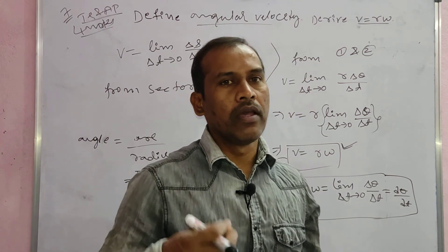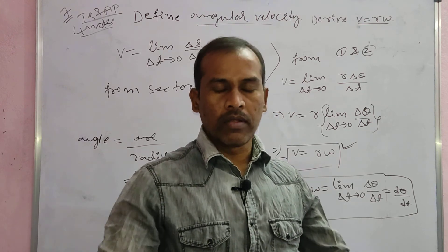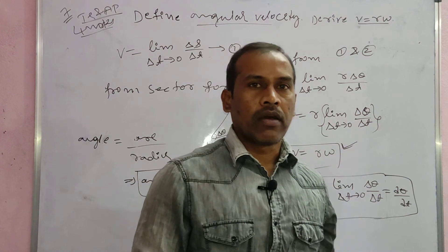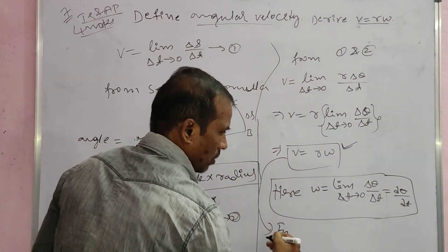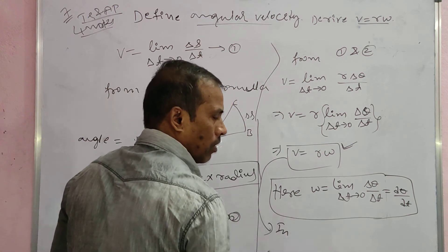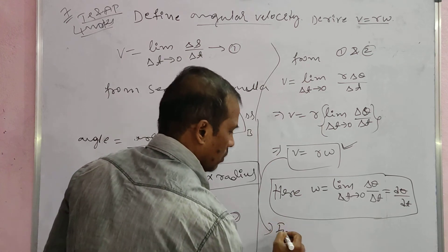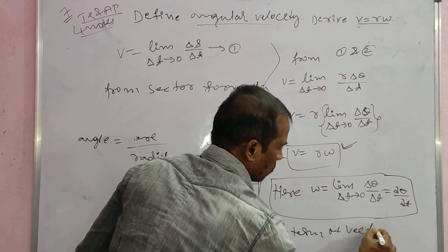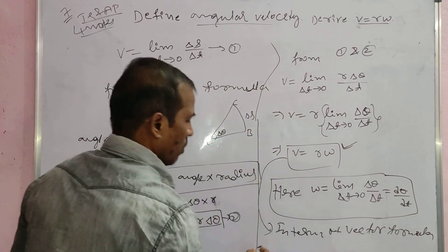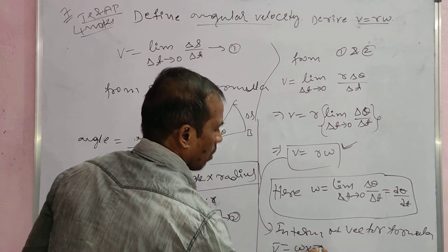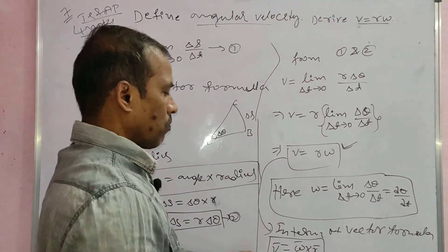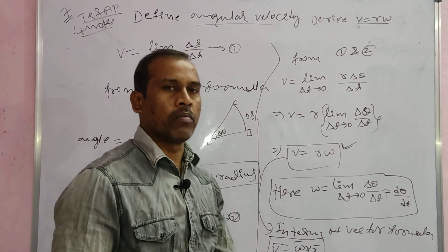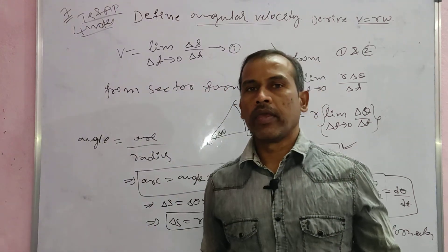In terms of vectors, this equation can be written as: V bar is equal to omega cross r. In vector form, V bar equals omega bar cross r bar. This is the four-mark question - very, very important in the IPE. It is a repeated question.